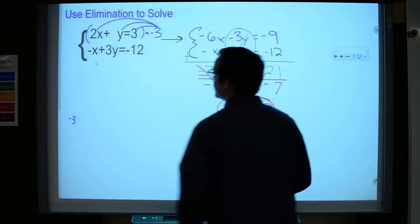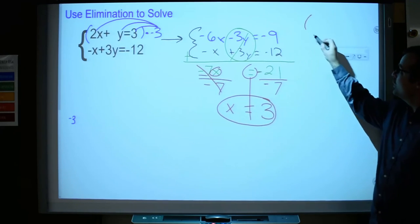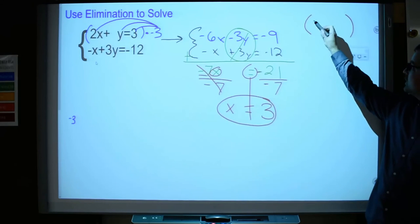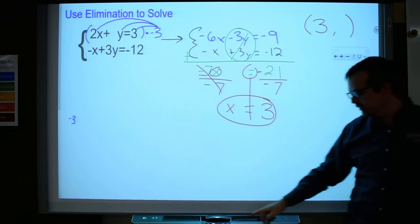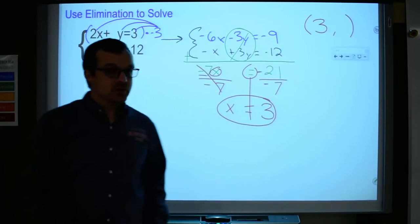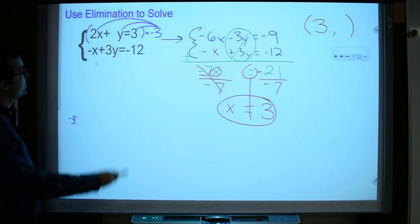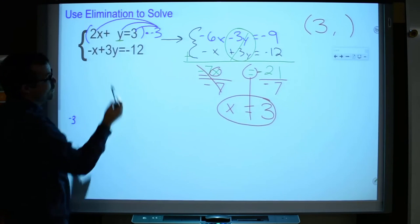That only tells me half of the ordered pair. It is the x part of my coordinates. I still need to solve for y, so I need to choose an equation that makes it pretty easy to solve for y. I'm going to go with the first equation because the y doesn't have a coefficient on it. Sometimes it does. It just so happens it doesn't here. You could use either of these equations to solve for y, though, as long as you replace x with 3.